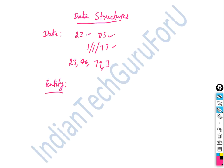Database management systems. An entity is a concept. For example, student is an entity, employee is an entity, and bank account is an entity. We will talk about entities and observe their attributes.